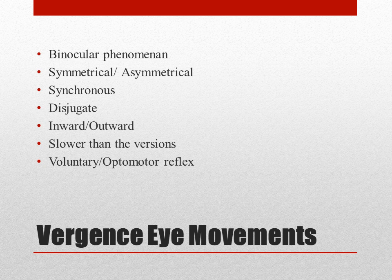Inward means when the two eyes are moving together towards the nose — that is the two eyes are adducting together — so that is called positive vergence or convergence. Whereas if the two eyes are moving away from the nose then that is negative vergence or divergence. Vergence has been found to have lesser velocity than that of versions, and vergence can also be voluntary or may be influenced by the optomotor reflex. The best example of voluntary vergence is convergence.